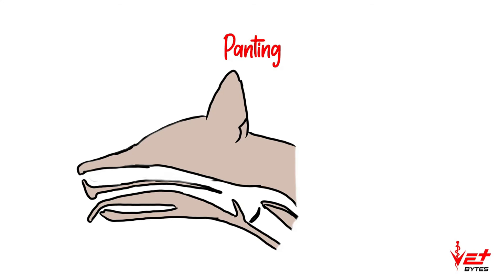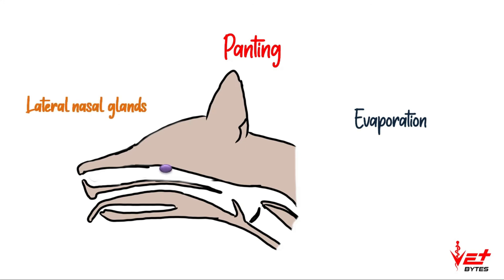Heat dissipation occurs by evaporation of fluids. The upper respiratory tract of the dog contains certain glands called lateral nasal glands, and secretions from these glands are evaporated to cause heat dissipation. These glands are analogous to sweat glands, and their secretion increases when the core body temperature rises above normal. These are the functions of the respiratory system other than respiration.